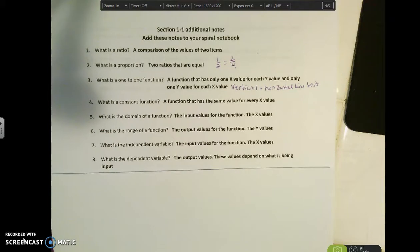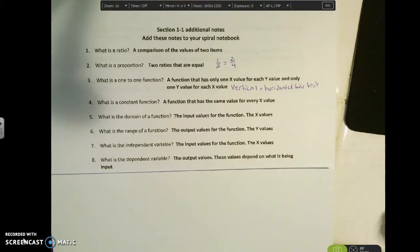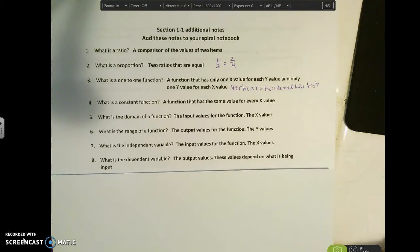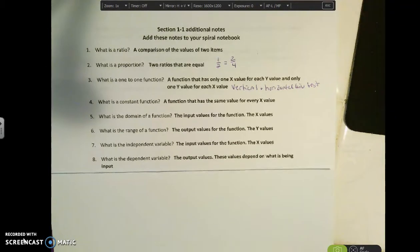And then the dependent variables are the output values of the y values. And I like to refer to this as they depend on what values you're putting in for x. So if I put different values in for x, I'm going to get different values for y. So y is the dependent variable.